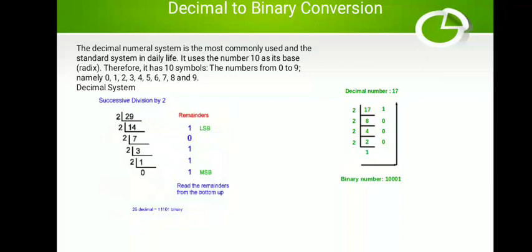A binary number is in the form of 1s and 0s. When we consider an integer number, the conversion is obtained by continuous division by 2, keeping track of remainders.